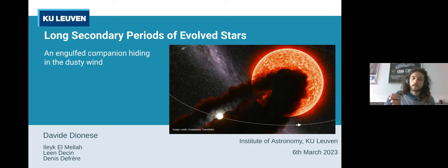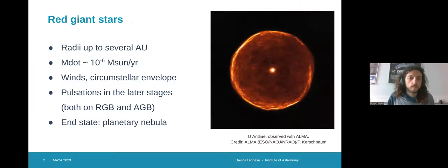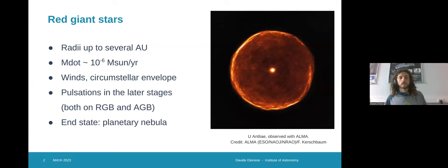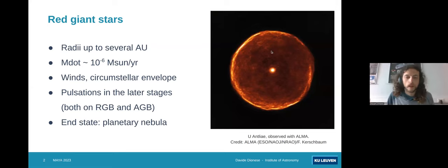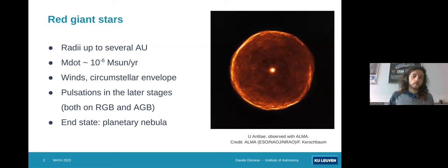In which the companion is hidden in a dust cloud orbiting around. Let me make a super brief introduction about what we mean by evolved stars. These stars usually have radii up to several astronomical units and are characterized by quite important mass loss. They also present winds that are shaping the circumstellar envelopes — as we can see in the figure on the right-hand side, we have the star in the middle and a sort of bubble envelope around it. These stars are also usually characterized by pulsation, at least in the later stages of their evolution, both on the red giant branch and on the asymptotic giant branch.